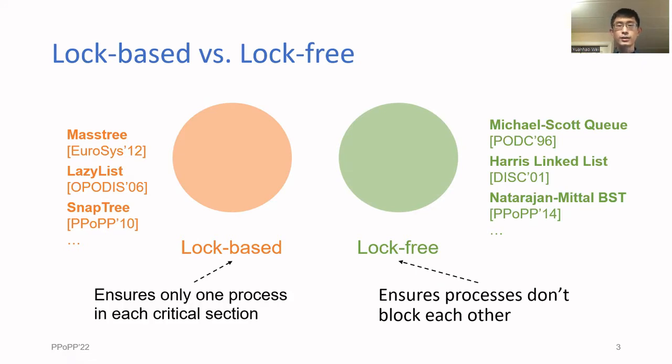Lock-free basically means that processors can't block each other from making progress. On the other hand, locking provides the abstraction that there's only one process executing a critical section at a time, and these don't contradict each other. The diagram should look something like this, although most algorithms lie squarely on one side or the other.